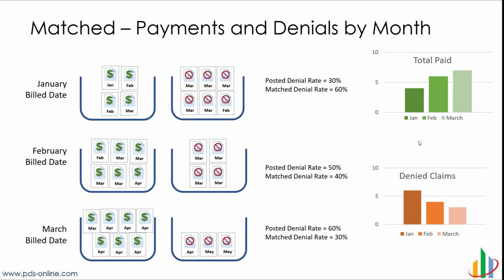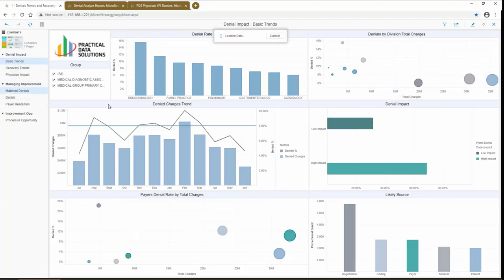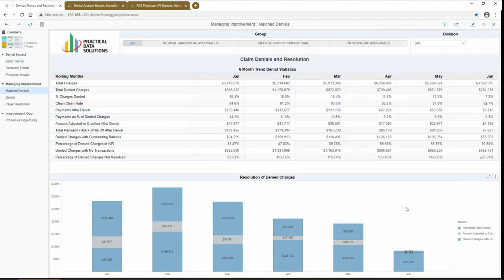We're seeing two very different measurements of denials — which one is better? The simple answer is you really need both. If we're going to look at things denied in March, we've got to work those and try to get them recovered. So we need to know what's going on by posting date, because that tells us which claims are denied and need to be reworked. But if we want to look at any kind of trends from a management perspective, we really need to understand what's going on from a matched perspective, and how that impacts the more advanced metrics we can calculate.